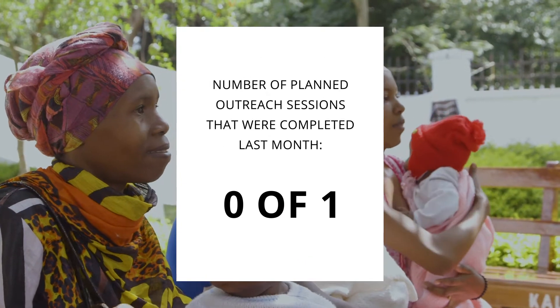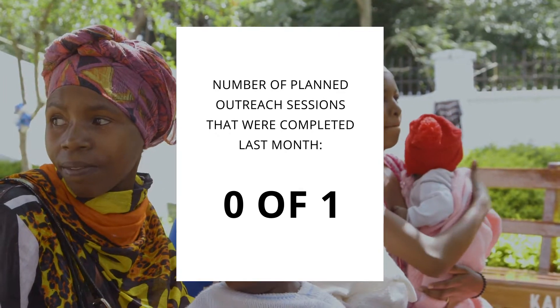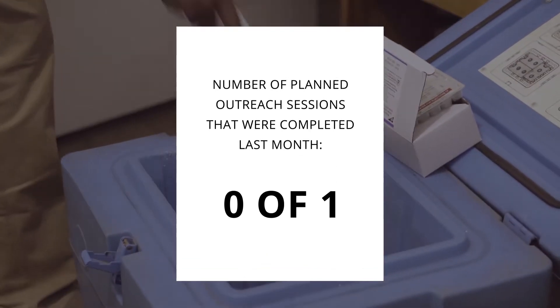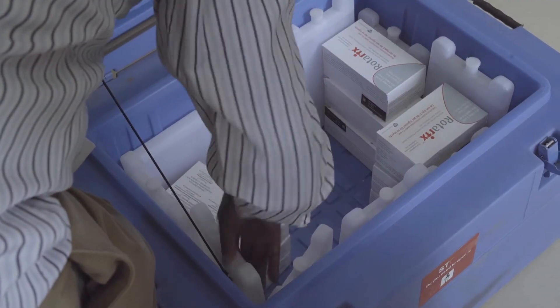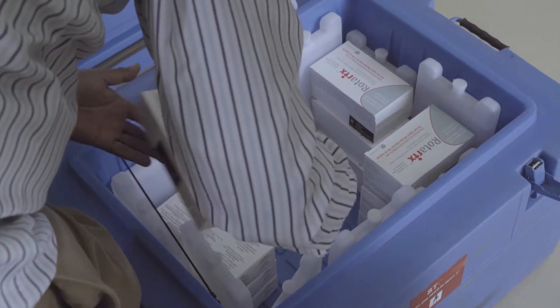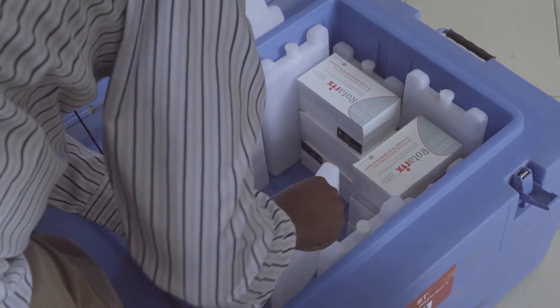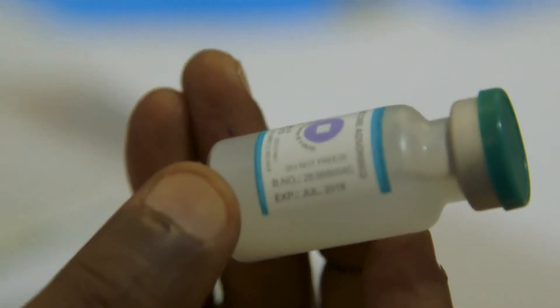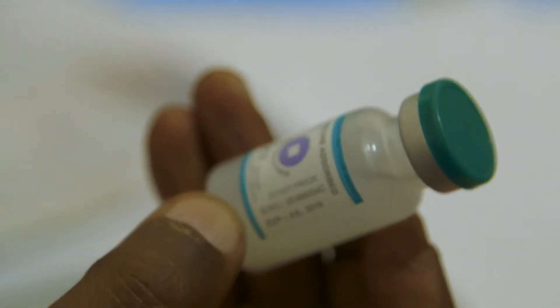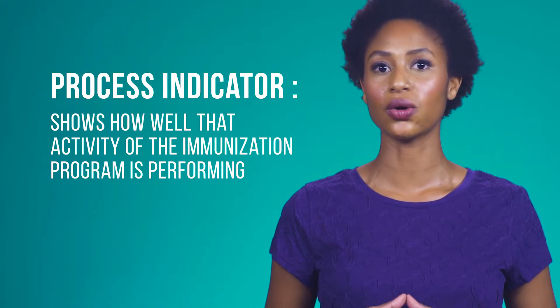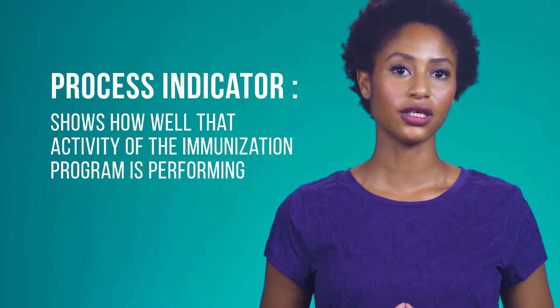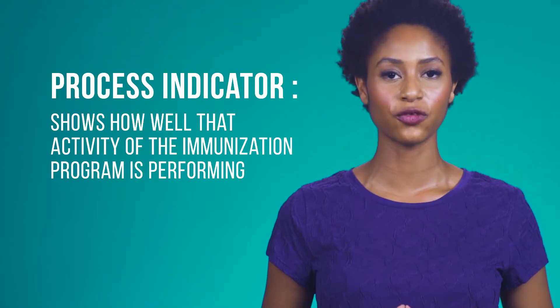This is an example of a process indicator. A process indicator is a measure of the ongoing activities that are necessary to ensure all infants and pregnant women in your catchment area, district or region are immunized against vaccine-preventable disease. For every important activity you are engaged with, a process indicator can show how well that activity of the immunization program is performing.